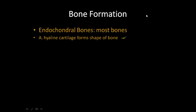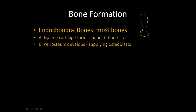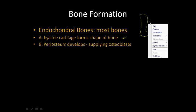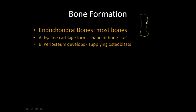A framework in the shape of the bone is going to form by hyaline cartilage. Then you're going to get the development of the periosteum — the living tissue that surrounds the bone and supplies it with its blood supply and nerve supply. The periosteum will supply the bone with osteoblasts, which build bone, into this hyaline cartilage model.